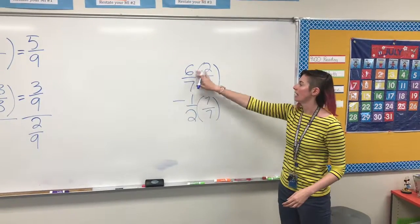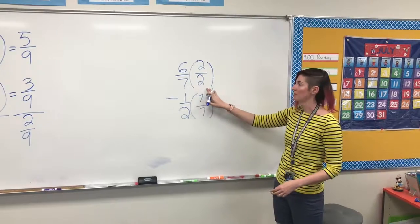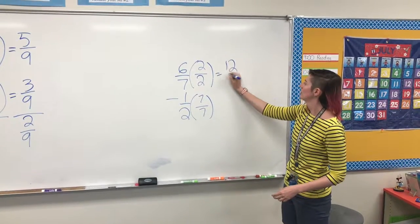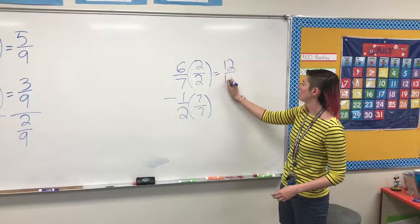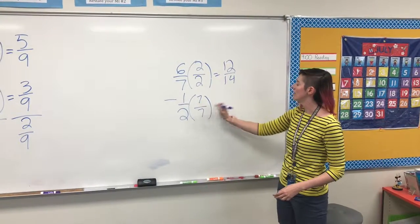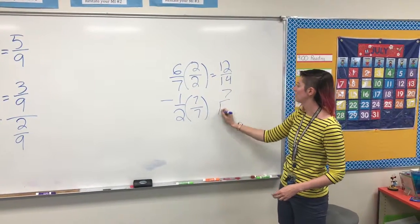Same as we did before. Top times top, bottom times bottom. 6 times 2 is 12. 7 times 2 is 14. 1 times 7 is 7, and 2 times 7 is 14.